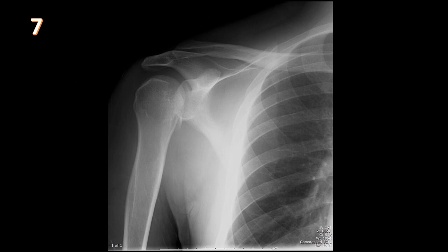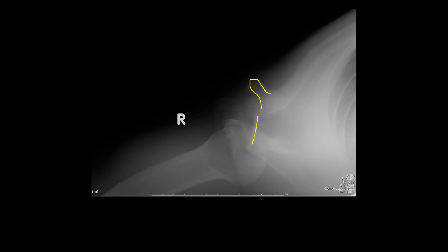AP radiograph of the shoulder shows the humerus fixed in internal rotation — the light bulb sign — which should always raise concern for posterior dislocation and prompt recommendation of an axillary view. A fracture fragment is seen projecting within the inferior glenohumeral joint. The axillary view confirms the diagnosis: the acromion is anterior for orientation, the glenoid and humeral head are incongruent, and there is a fracture of the lesser tuberosity.